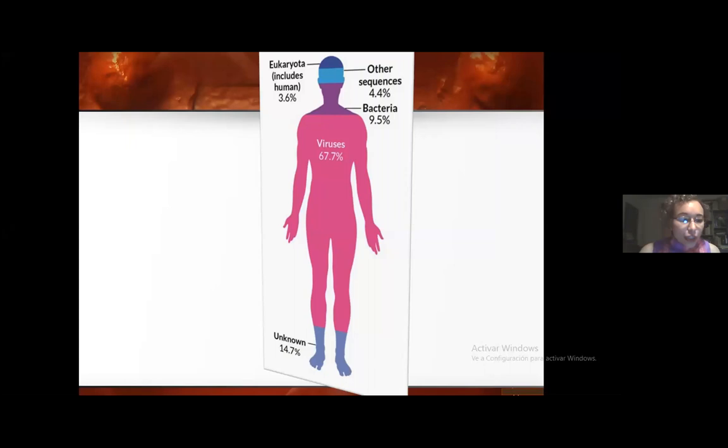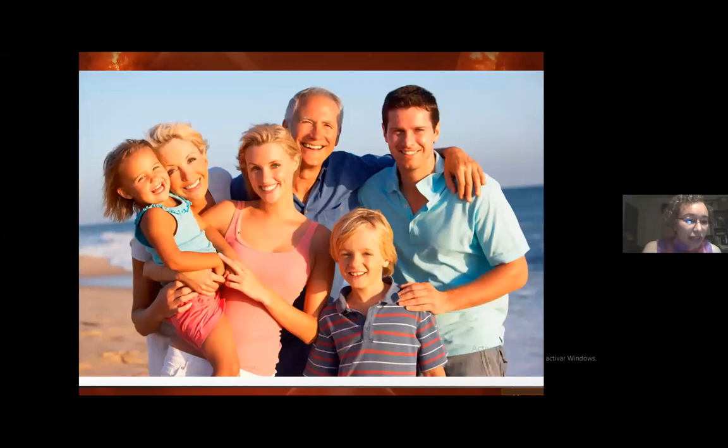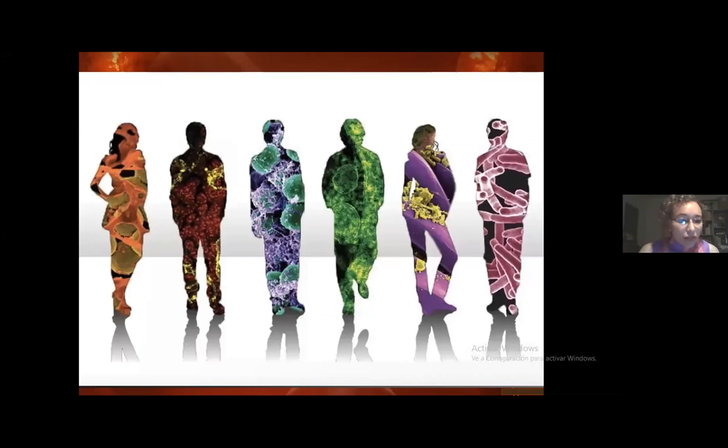One thing you have to know is that we are not purely human by nature — we are defined by our microorganisms. For each human cell, we have 10 bacterial cells, and for each cell we have 100 viral particles. So more than 96 percent of our body, by number, is composed of microorganisms.